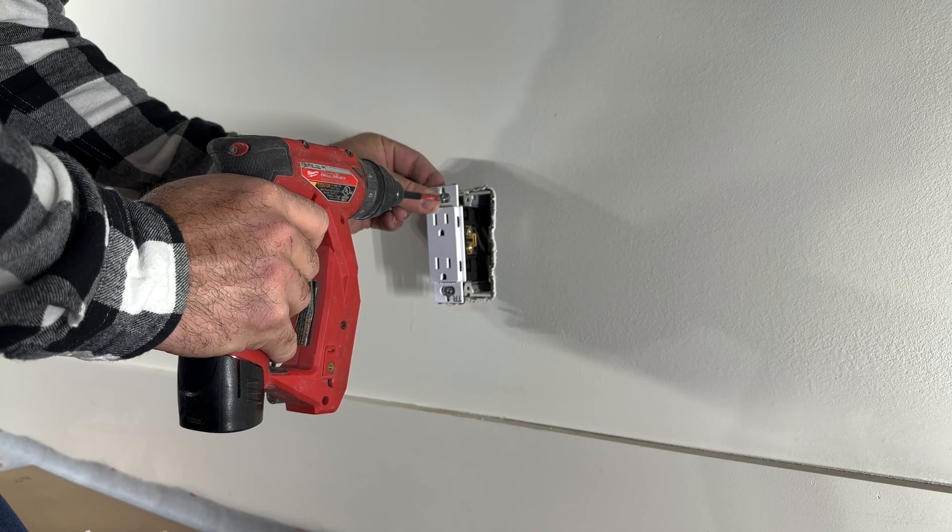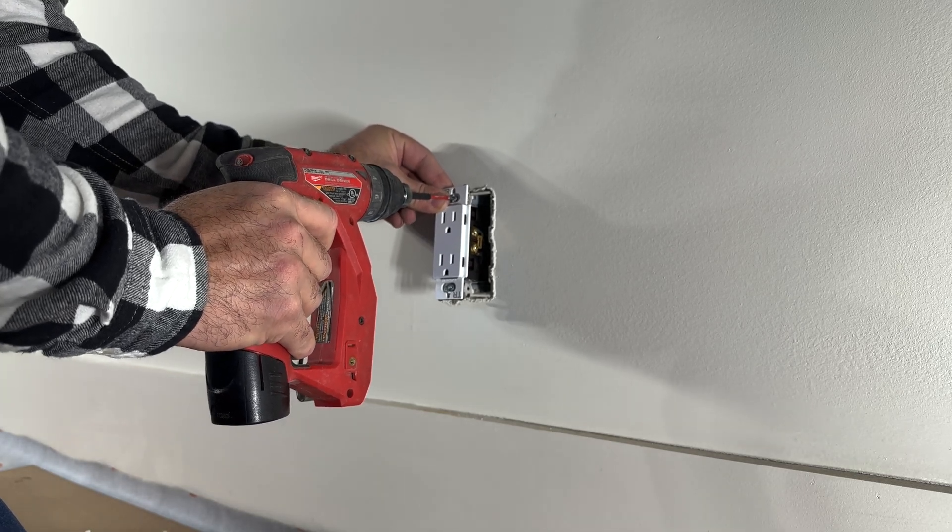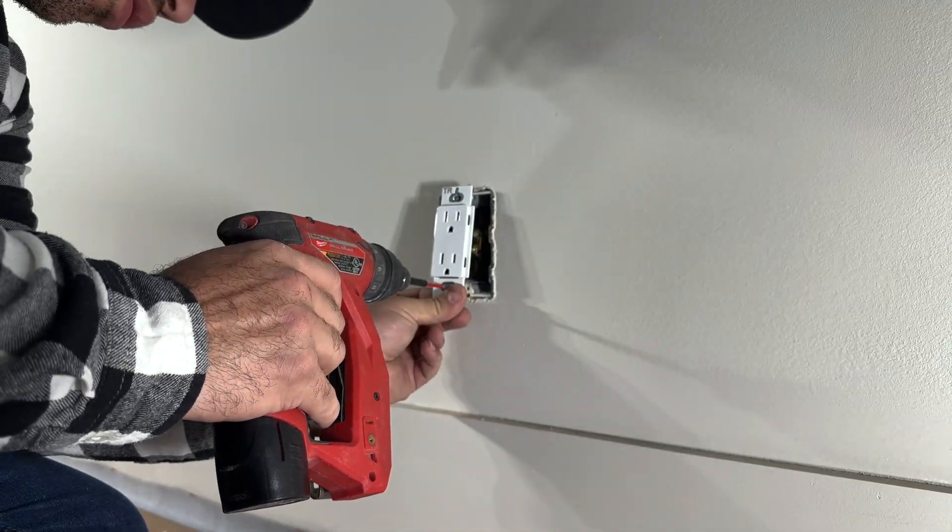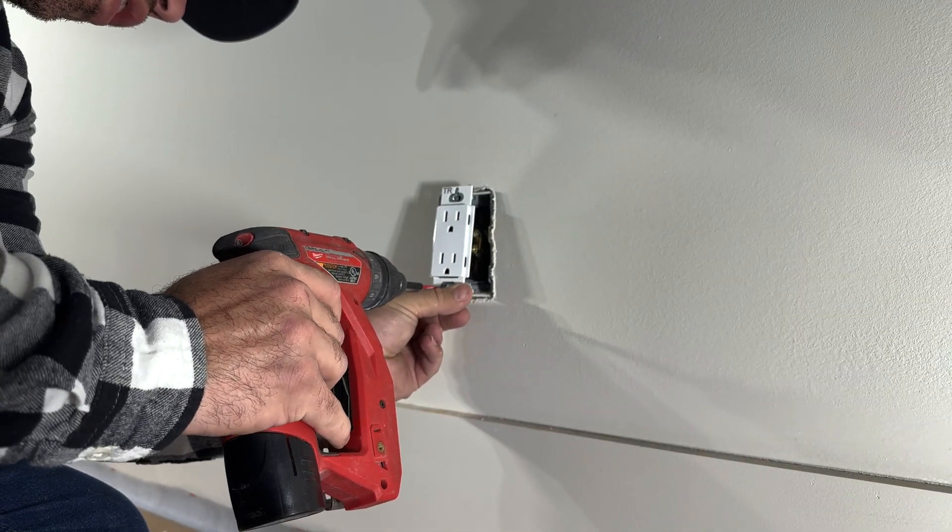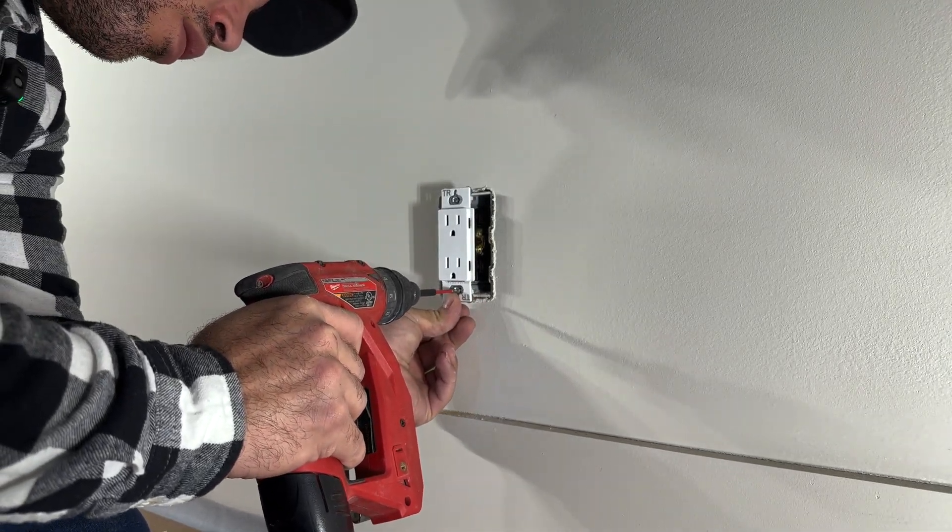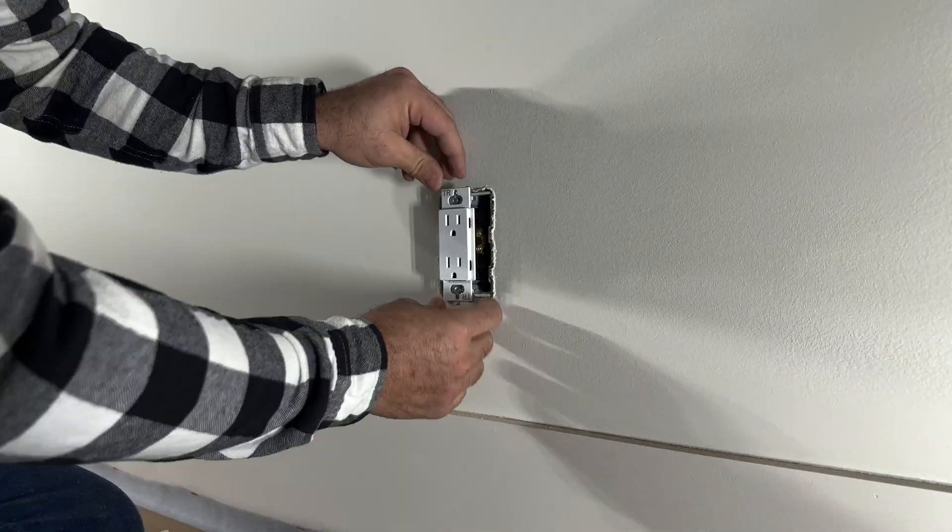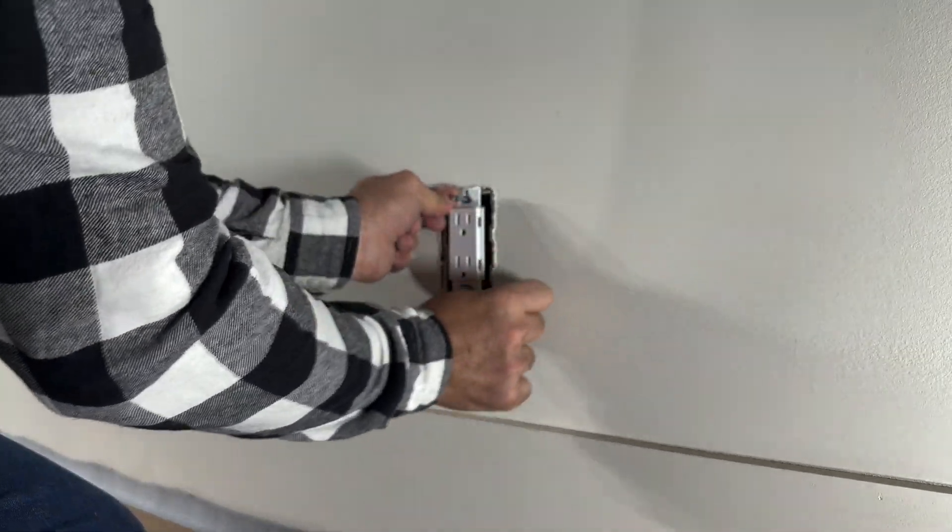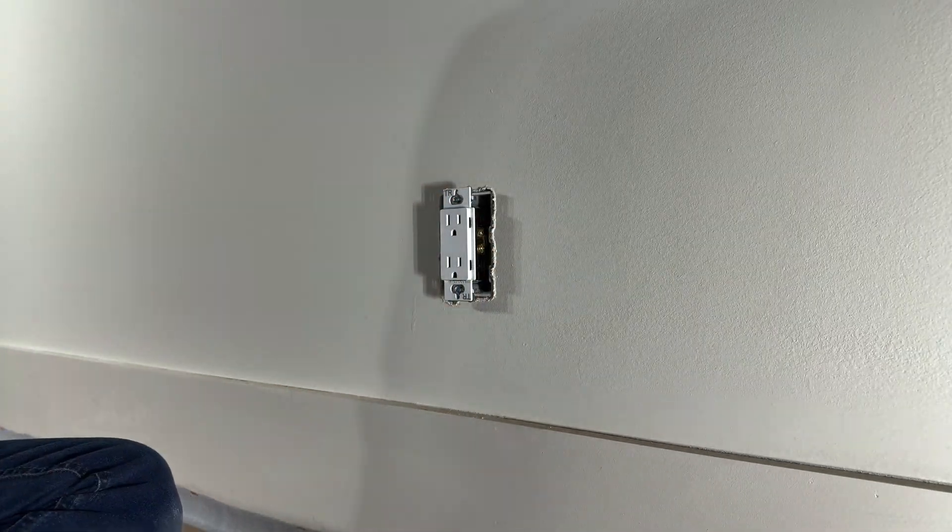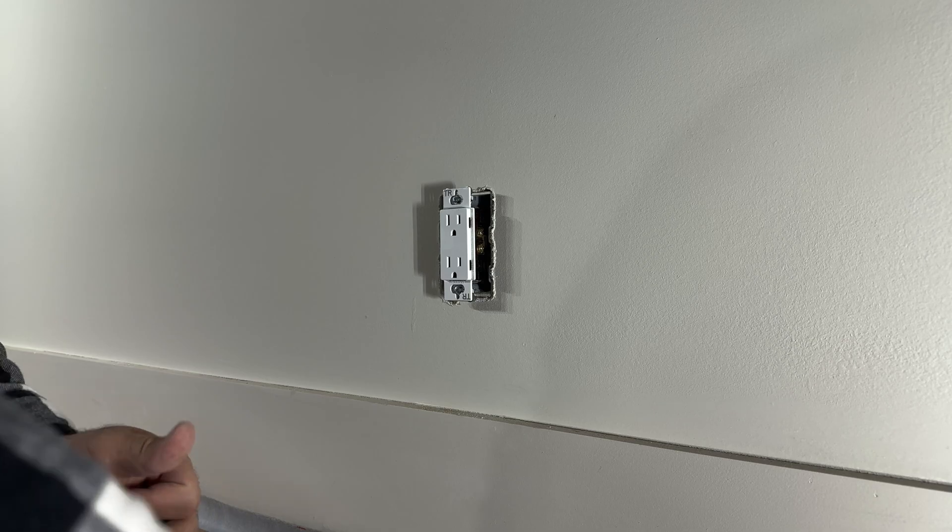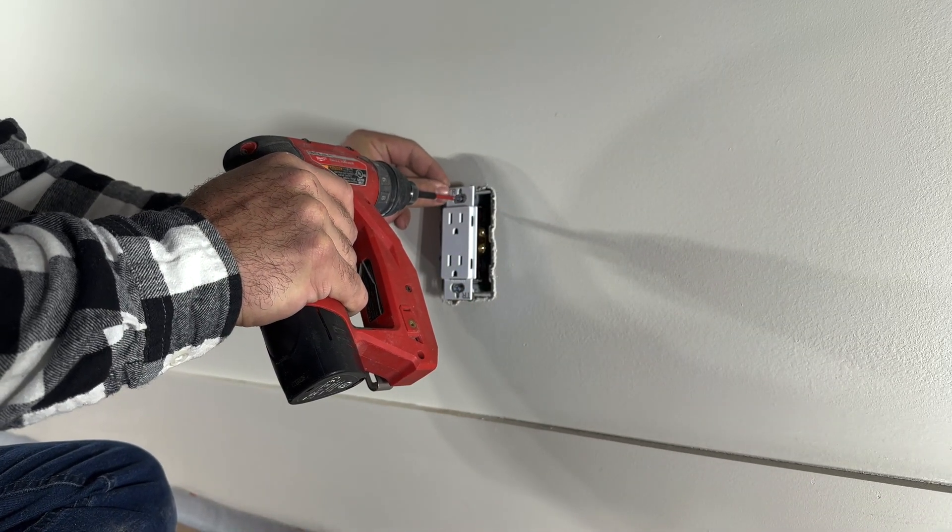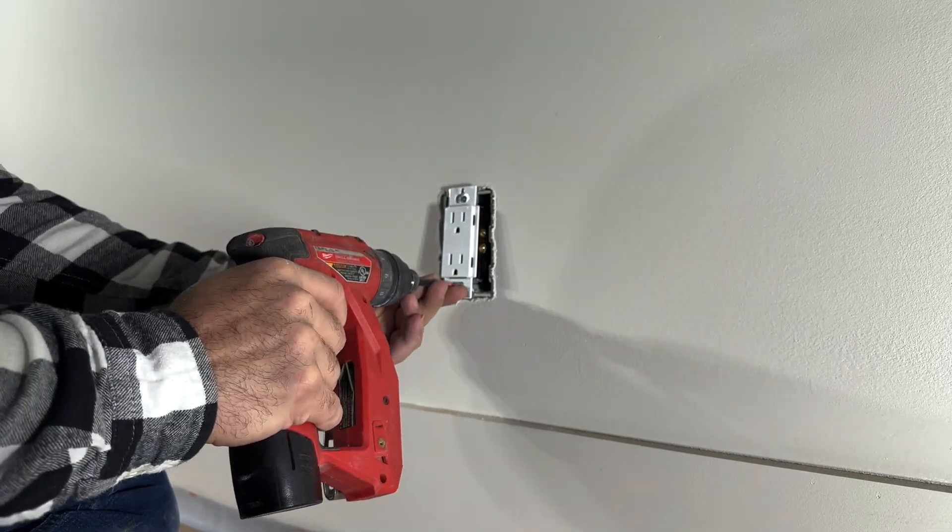Now we will put our receptacle in. What I like to do is just screw a little bit, and then make sure everything is straight. And do this before I tighten it so I don't crush the wires at the back of the box. If it goes smooth, then you know that your wires are not cramped up behind the receptacle.